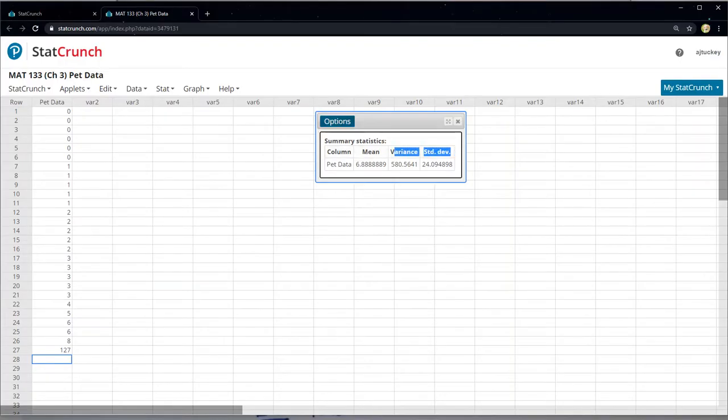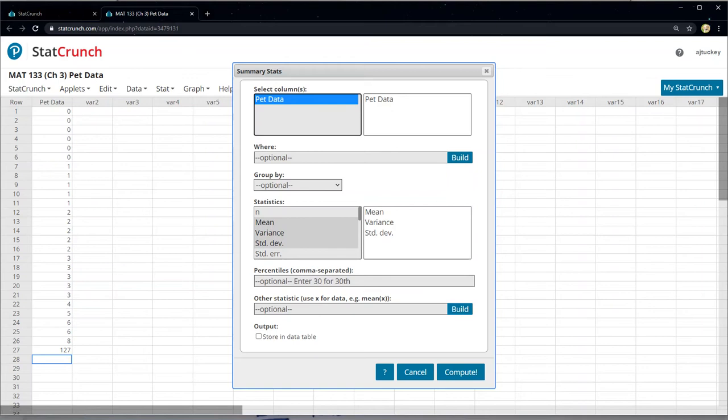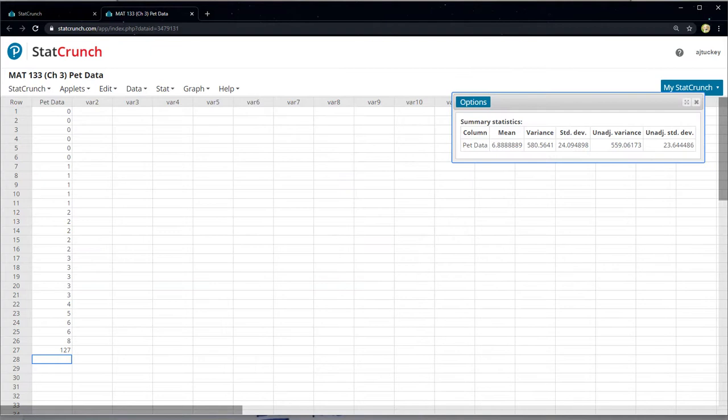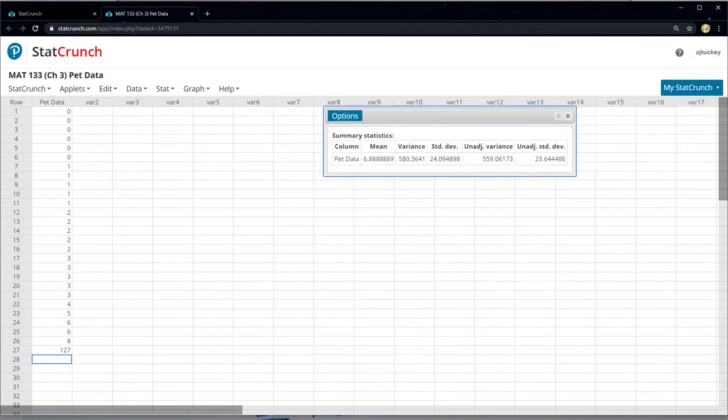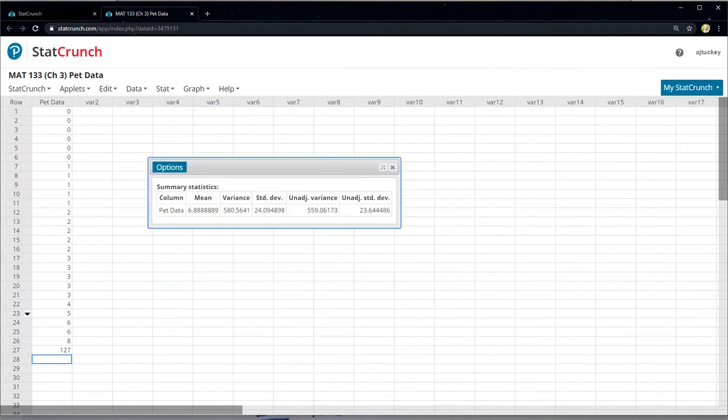Let me edit that. So I found those three, but let me scroll down. There they are. Unadjusted variance and unadjusted standard deviation. So those are the population values. So those are saying, hey, I don't know if this data set's a sample or a population.